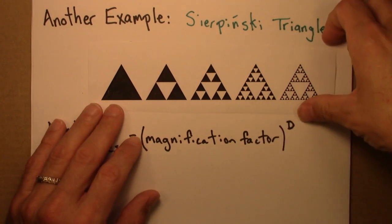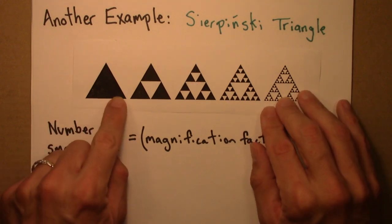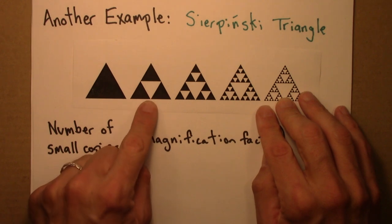You've likely seen it before. Here are the steps in its construction. One starts with a solid triangle and then removes from that triangle the middle triangle, like this.